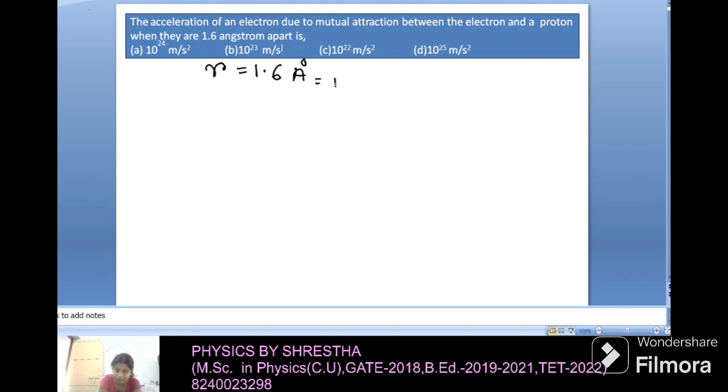So here the distance r equals to 1.6 angstrom, that means 1.6 multiplied by 10 to the power minus 10 meter.